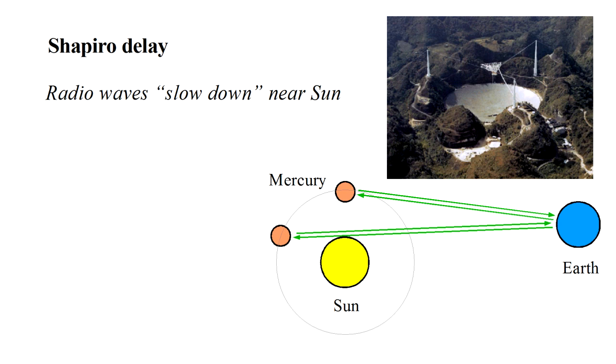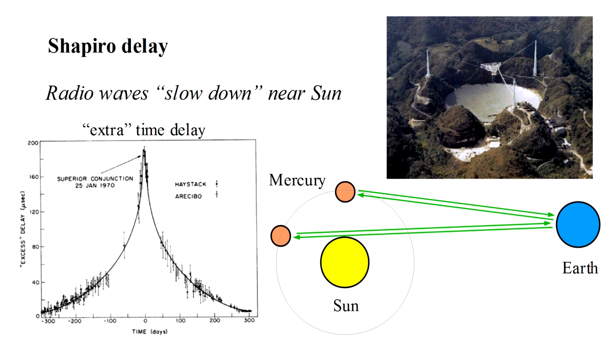By comparing the theoretical time delay, which is the round-trip distance divided by the speed of light, to the measured time delay, any significant variations in the speed of light could be observed. And indeed, the data, spanning almost two years, the points with error bars on this plot, showed a very clear extra time delay varying with orbital position precisely as predicted by general relativity. The solid curve.